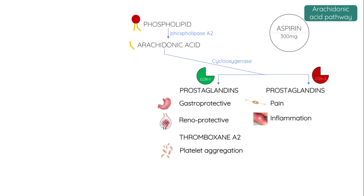Aspirin irreversibly inhibits cyclooxygenase. So by inhibiting COX-2, larger doses of aspirin have traditionally been used as an anti-inflammatory and analgesic. However,